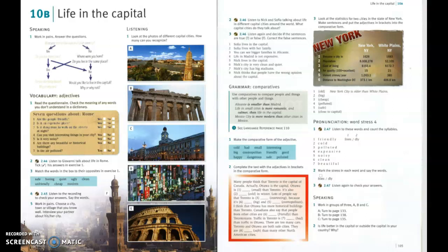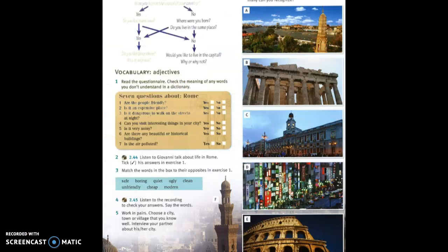Let's start talking about that listening and some vocabulary. So the first part brings in these adjectives. First of all, set the context, show some pictures of Rome and ask the students what city they think it is and what they know about it. Tell them they're going to listen to someone called Giovanni, who lives in Rome, talking about his city.